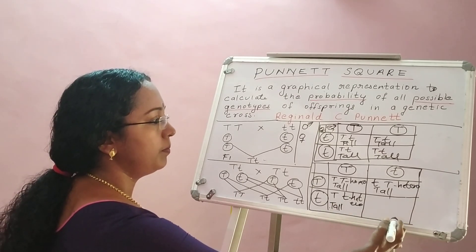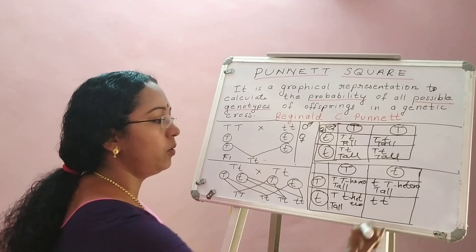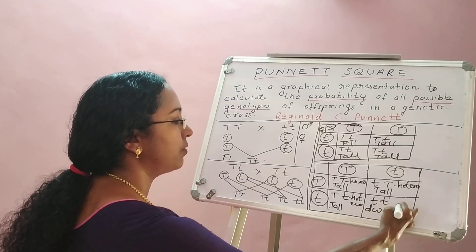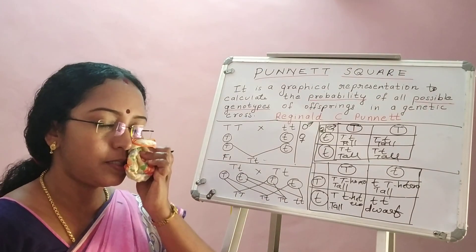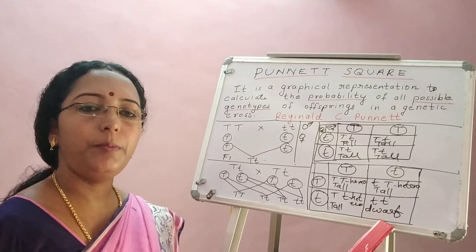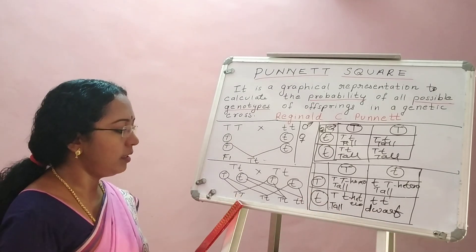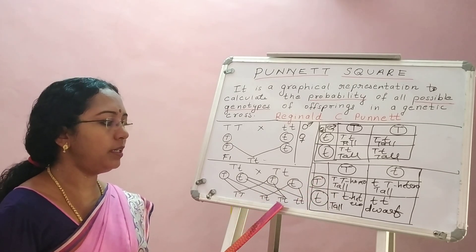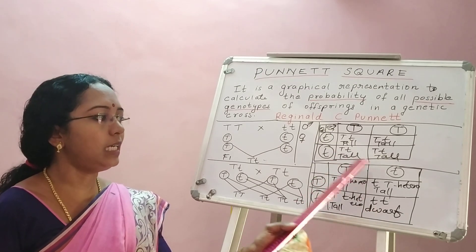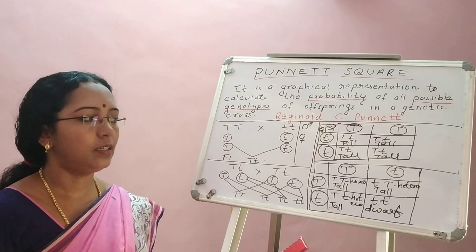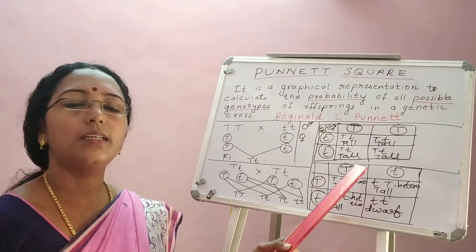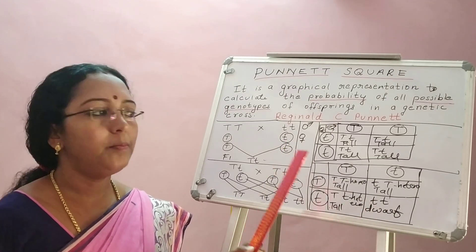For the last square, the top gamete is small t and the left gamete is also small t — giving small t, small t. There is no capital T, so the plant is not tall but dwarf. As we learned previously, recessive characters are always homozygous. So in F2 we get: capital T capital T once, capital T small t twice, and small t small t once.